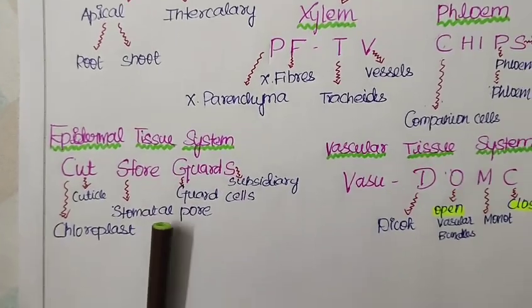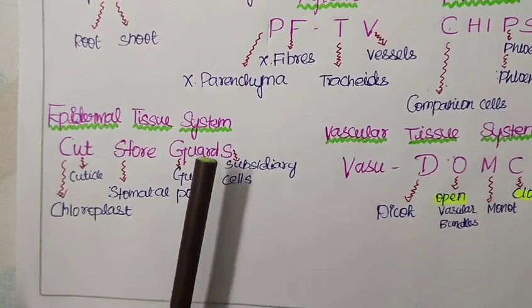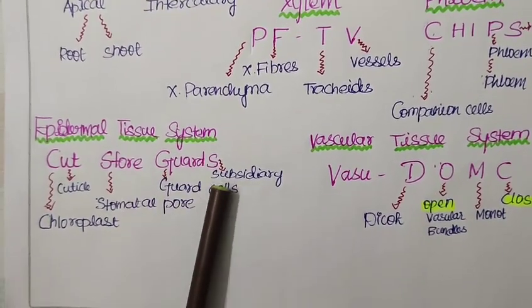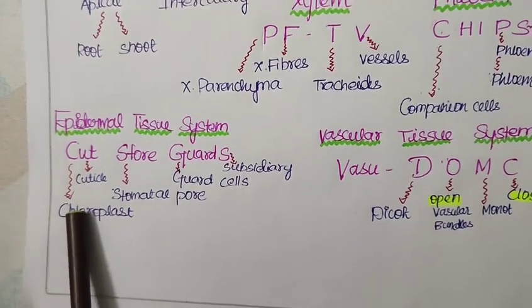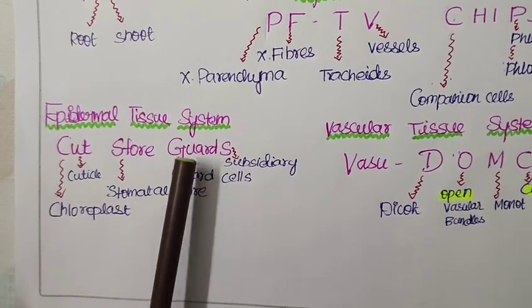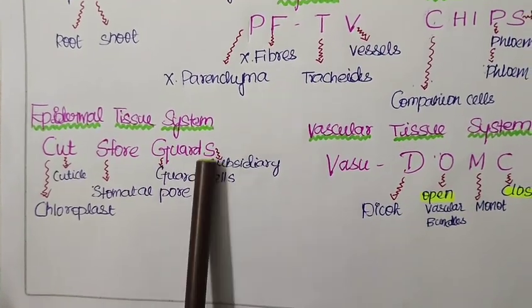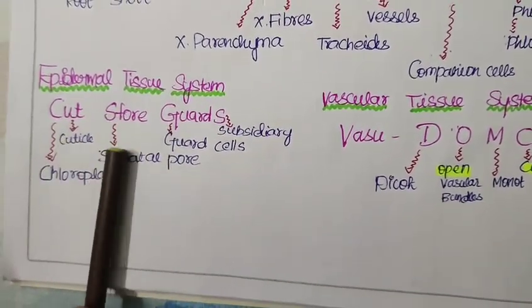Now we will see the short tricks for the epidermal tissue system. The epidermal tissue system short trick will be cut store guards. We are cutting the store guards. Here cut is for chloroplast as well as cuticle. Store is for stomatal pore. Guard stands for guard cell and the last S for subsidiary cell. This is the short trick for epidermal tissue system.